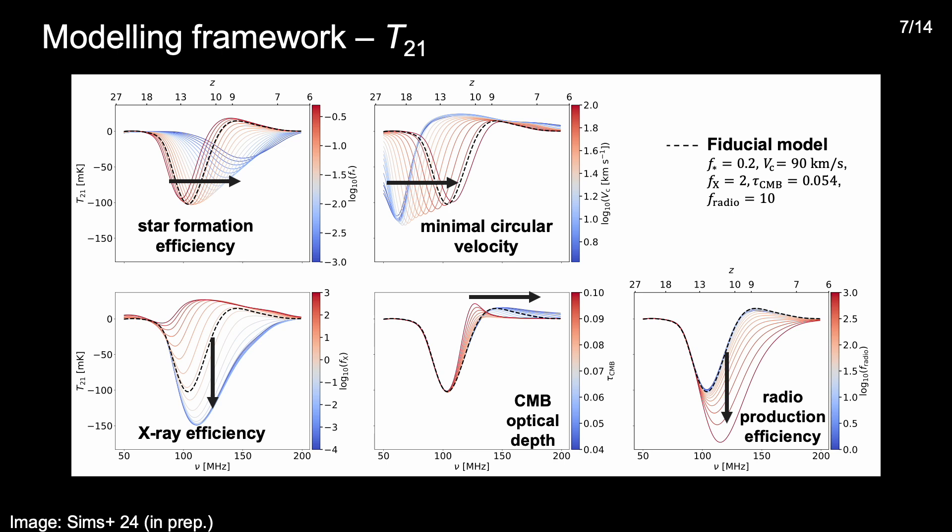The main takeaways from these plots are firstly that most of the parameters of the model have a significant influence on the expected global 21cm signal. However, to first order, the effects of varying the star formation efficiency, the minimum circular velocity, and the CMB optical depth are to translate the signal in redshift due to change in the fraction of gas collapsing into stars, delaying star formation, or changing the galactic ionizing efficiency.